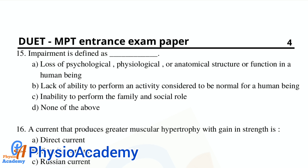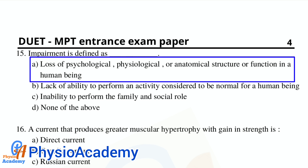Question number 15: Impairment is defined as — Option A: loss of psychological, physiological, or anatomical structure or function in a human being. Option B: lack of ability to perform an activity considered normal for a human being. Option C: inability to perform the family and social role. Option D: none of the above. The correct answer is option A, loss of psychological, physiological, or anatomical structure or function in a human being.